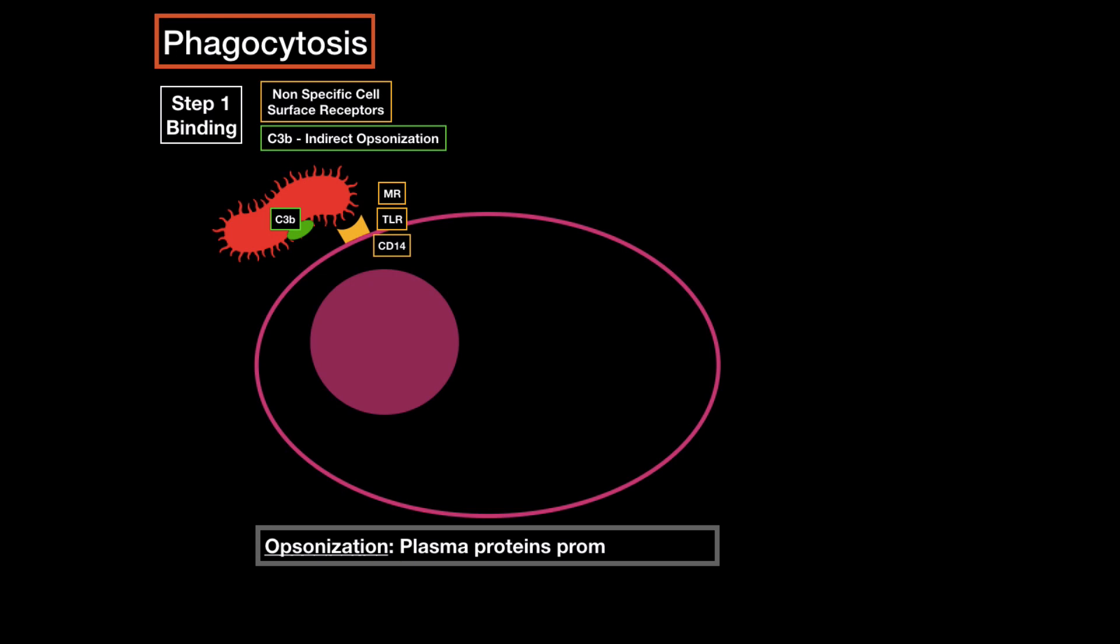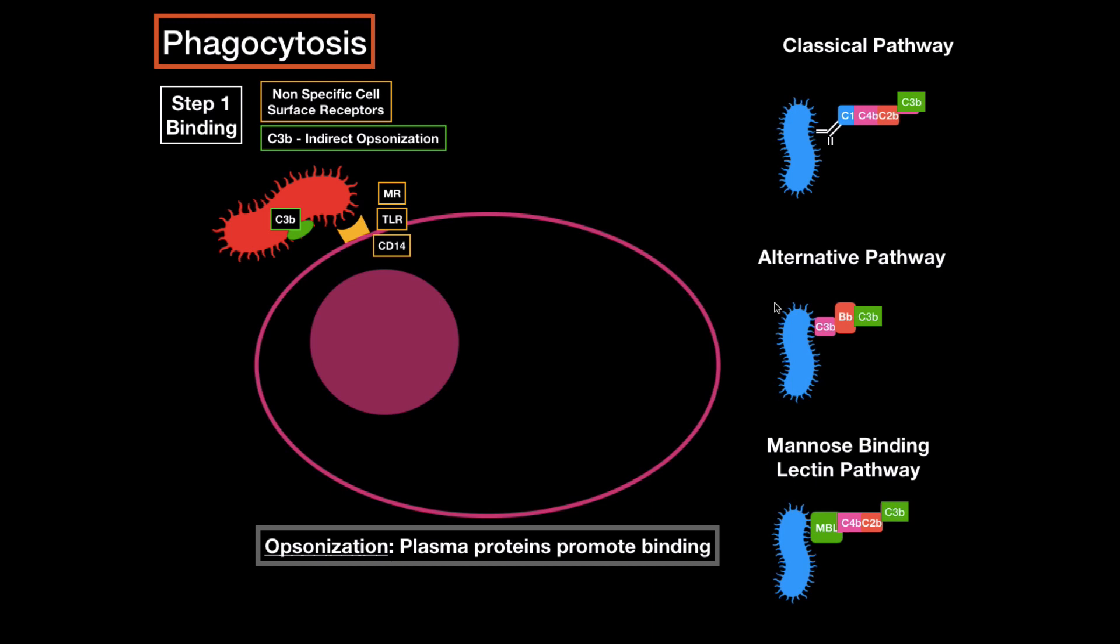The second way is by indirect opsonization, with the help of the complement system. Opsonization means when the plasma proteins promote binding, meaning when the plasma protein sits on the microorganism, and it helps the phagocyte bind, so that it can phagocytose. Now why is it called indirect opsonization? Because somehow everything that does not include binding of antibodies are indirect. Now I haven't gotten into what a complement system is yet, but in case you're not familiar with it yet, I'll give you a quick overview. There are three ways the complement system works, either classical, alternative, or mannose. And all of these three pathways leads to C3b opsonization, where it promotes phagocytosis, because the phagocyte actually has receptors for C3b, called C3b receptors.